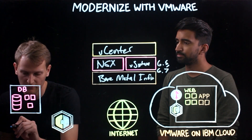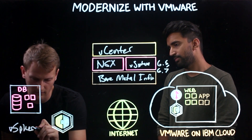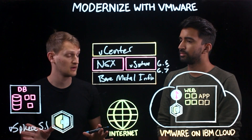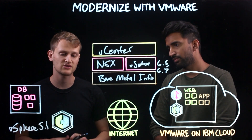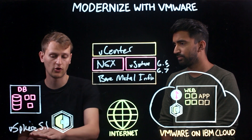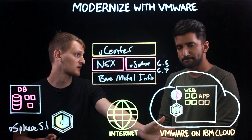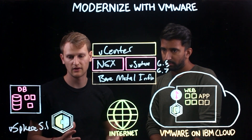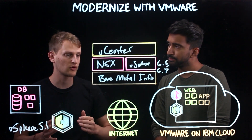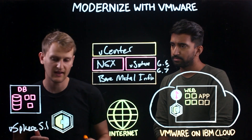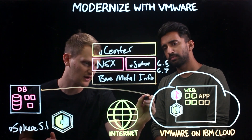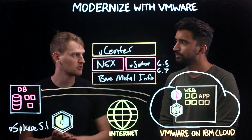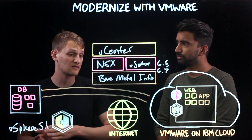HCX allows customers to actually migrate from vSphere 5.1, which can be running on any hardware, into the newest hardware running 6.7 and whatever VMware is releasing in the future. How it does this is by creating a loosely coupled network which allows you to essentially stretch your network. Through stretching your L2 network, it allows you to create connections where you can bring your own IP addresses and your MAC addresses.